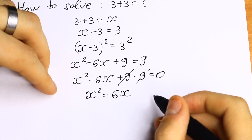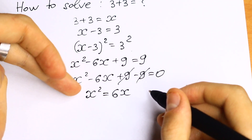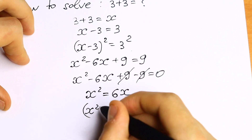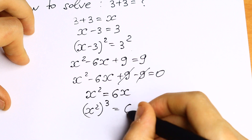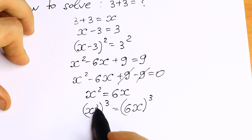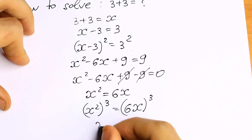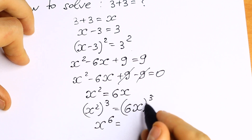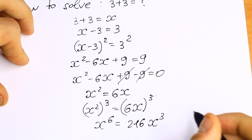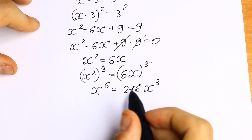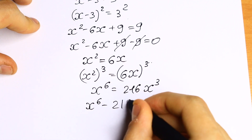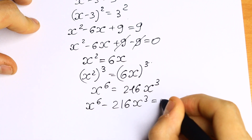Let's simplify this a little bit. Let's raise both sides to the third power because this is hard for us. If we raise to the third power we'll have that x squared raised to the third power equal to 6x to the third power. We need to multiply this. We'll have x to the sixth power equal to 6 cubed times x cubed. 6 cubed equals 216 times x cubed. Let's bring this to x to the sixth minus 216x cubed on the left equal to 0.